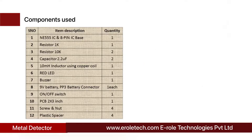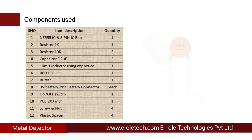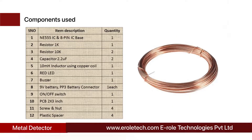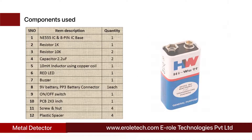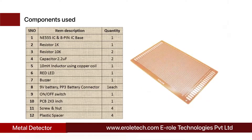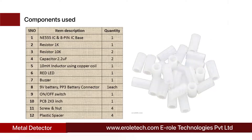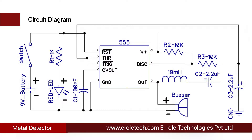These are the components needed in this project: a 555 timer IC, an 8-pin IC base, a 1 kilo ohm resistor, two 10 kilo ohm resistors, two 2.2 microfarad electrolytic capacitors, a 100 nanofarad ceramic capacitor, a 10 milli henry inductor using copper coil, one red LED, one buzzer, a 9 volt PP3 battery with connector, an on/off rocker switch, a zero PCB, four screws with nuts, and four plastic spacers.